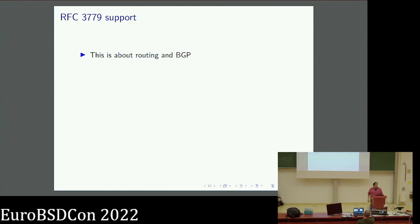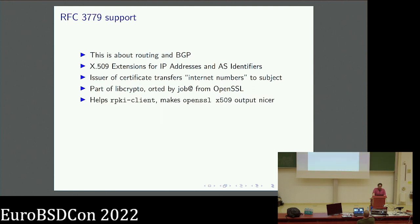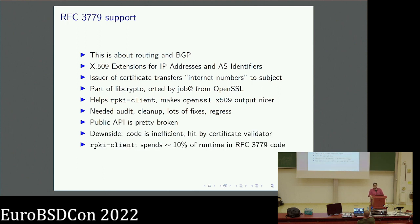There is also RFC 3779 support, requested by Yob. This is about routing and BGP — specifically an X.509 certificate extension for IP addresses and identifiers of autonomous systems, where the issuer of a certificate transfers some internet numbers to the subject. This is part of LibCrypto, ported by Yob. It helps RPKI client and makes the OpenSSL X.509 output nicer. Unfortunately the public API is pretty broken, it's inefficient, and it costs about 10% runtime performance loss for RPKI client.